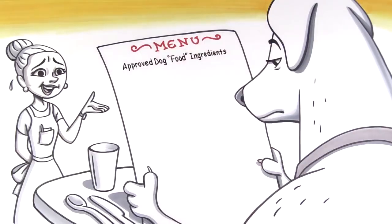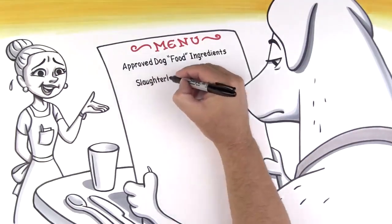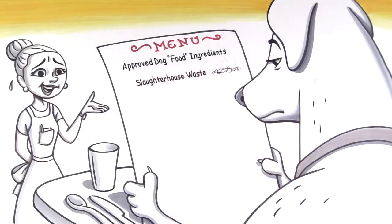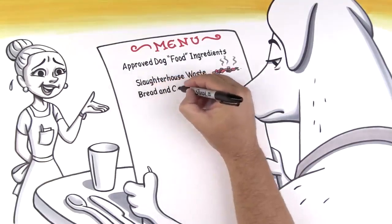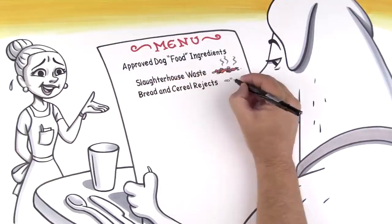Wasted slaughterhouse organs, heads, hooves, beaks, and feet. Bread and cereal rejects like cobs, stalks, and mill sweepings.